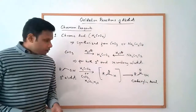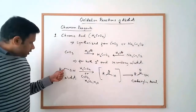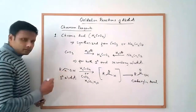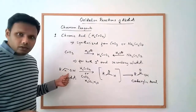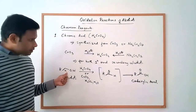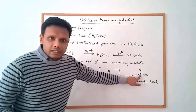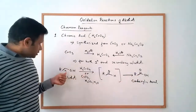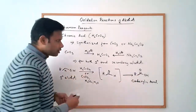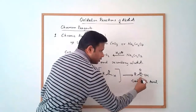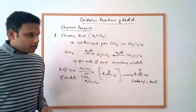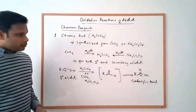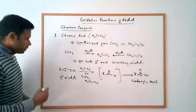Note the connection here: the alpha carbon in the primary alcohol is what becomes the C=O, and the hydroxyl stays. So the alpha carbon becomes the acyl carbon of the carboxylic acid.